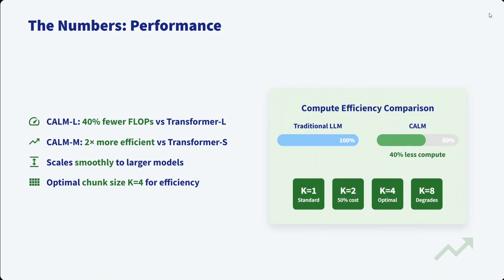Let's talk about the numbers. CALM-L uses 40% fewer FLOPs versus Transformer-L. CALM-M is two times more efficient versus Transformer-S. It scales smoothly to large models. The optimal chunk size is k equals 4 for efficiency. As token compression increases — for example k equals 8 — performance decreases noticeably.